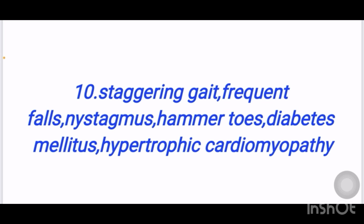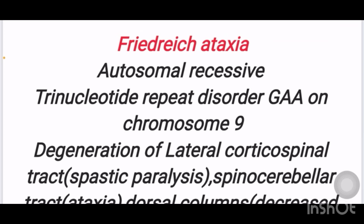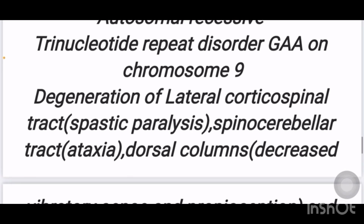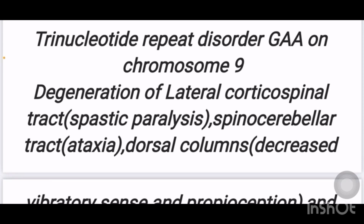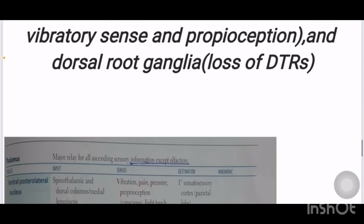Next scenario: staggering gait, frequent falls, nystagmus, hammer toes, diabetes mellitus, and hypertrophic cardiomyopathy. The diagnosis is Friedreich's ataxia. It is an autosomal recessive trinucleotide repeat (GAA) disorder on chromosome 9. Degeneration of lateral corticospinal tracts causes spastic paralysis; spinocerebellar tract leads to ataxia; dorsal column causes decreased vibratory sense and proprioception; dorsal root ganglion lesion causes loss of deep tendon reflexes.